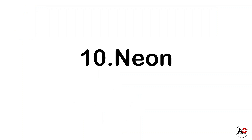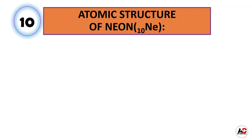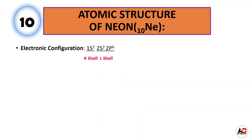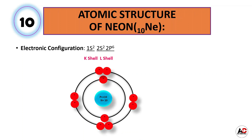Now neon. Atomic structure of neon. The atomic number of neon is 10, meaning it has 10 electrons. So the electronic configuration of neon is 1s2, 2s2, and 2p6. With the help of this electronic configuration, the atomic structure of neon will be like this. It has 10 protons and 10 neutrons inside the nucleus and 10 electrons around the nucleus: 2 are in the K shell and 8 are in the L shell.